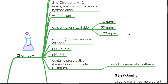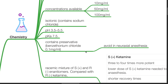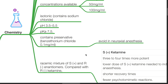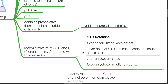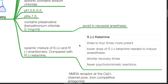It is isotonic and contains sodium chloride. pH is 3.5 to 5.5, pKa is 7.5. It contains the preservative benzethonium chloride at 0.1 mg/ml. Avoid use in neuraxial anesthesia. It is a racemic mixture of S-dextro and R-levo enantiomers. Compared to R-levoketamine, S-dextroketamine is 3 to 4 times more potent. A lower dose is needed to induce anesthesia, with shorter recovery times and fewer psychomimetic reactions.